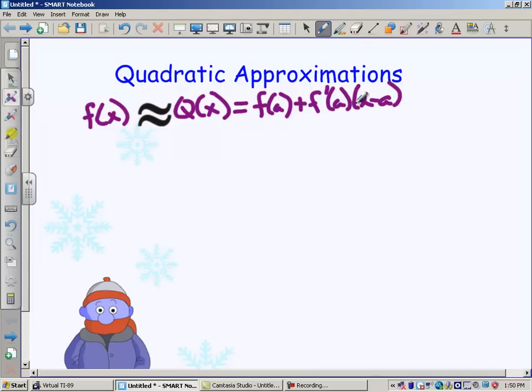I'm going to add one more term here for quadratic, and it's going to be f double prime of a over 2 factorial times x minus a squared.